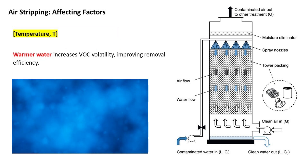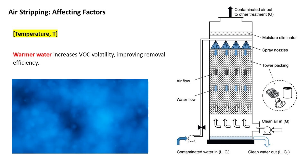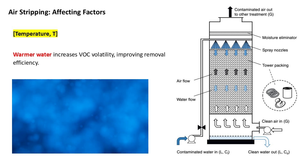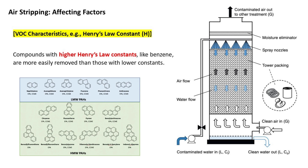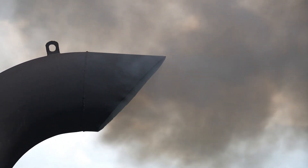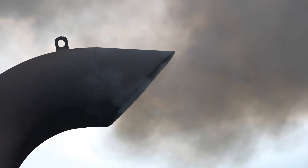Third, temperature: warmer water increases VOC volatility, improving removal efficiency. Fourth, specific VOC characteristics: compounds with higher Henry's Law constants, like benzene, are more easily removed than those with lower constants. While air stripping is effective for many VOCs, it has limitations. For example, it is not suitable for non-volatile or semi-volatile contaminants. Additionally, the treated air requires careful handling to prevent secondary air pollution.